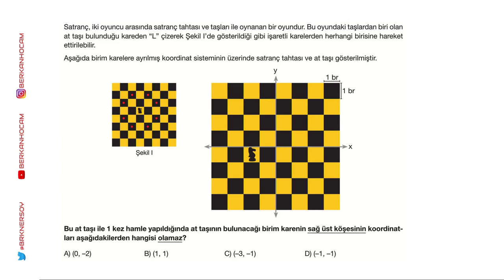Bu yeni nesil bir soru arkadaşlar. Yeni nesil sorularda öğrenciler çok sıkıntı çekiyor. Soruyu önce anlamak çok önemli. Satranç 2 oyuncu arasında satranç tahtası ve taşlarıyla oynanan bir oyundur. Bu oyundaki taşlardan biri olan at taşı L şekli çizerek hareket ettirilebilir. Satrançı bilen arkadaşlar için önemsiz bir bilgi ama gene de bir göz atmakta fayda var.